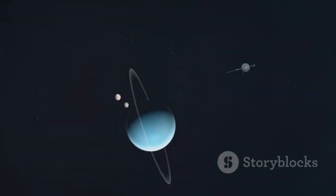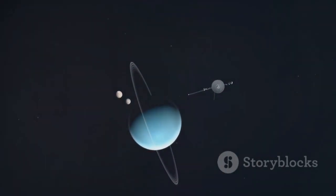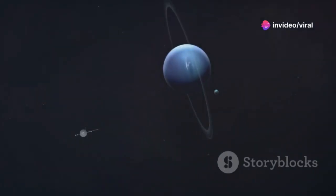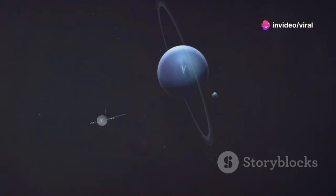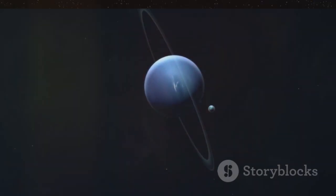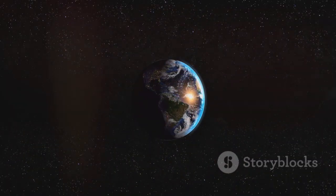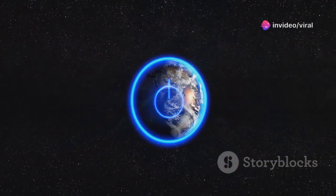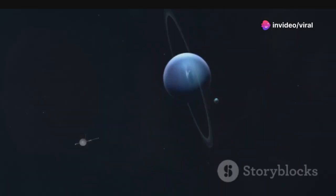Voyager 1 became our eyes and ears in the far reaches of the solar system, venturing farther than any spacecraft before it. It sent back breathtaking images and invaluable data, revealing new wonders and rewriting our understanding of the giant planets. It was a bold gamble, aimed at the heart of the outer planets, driven by questions about swirling storms, mysterious rings, and volcanic moons.